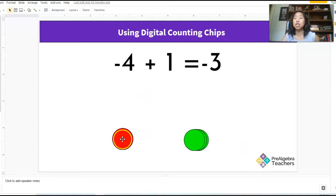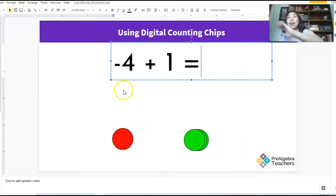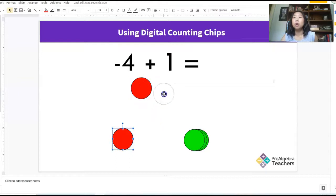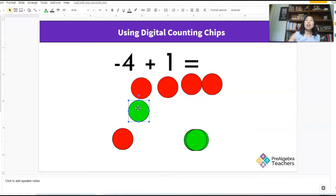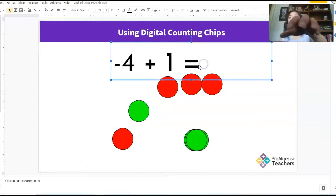Okay, so if I was using counting chips, I would show my students negative four plus one. I'm going to pull out four negatives, four negative chips, plus one positive chip. And I would show my students that a negative and a positive zero out. So if these zero out, what do you have left? Negative three. Exactly.